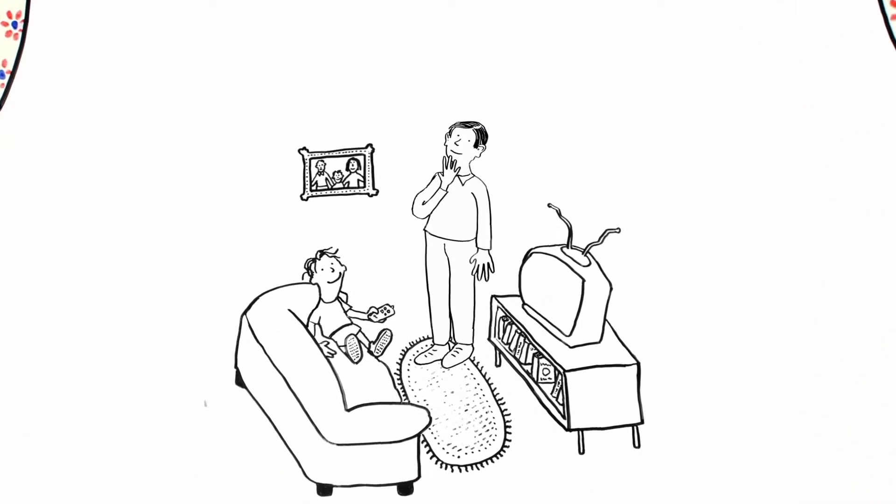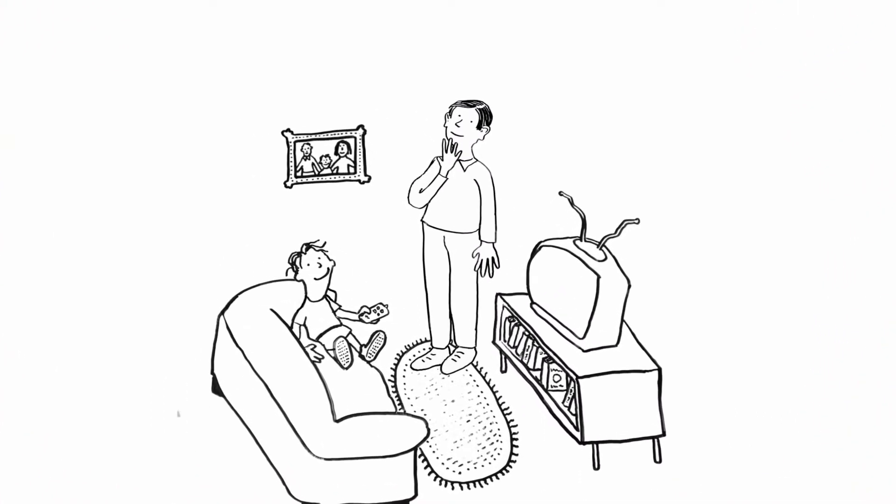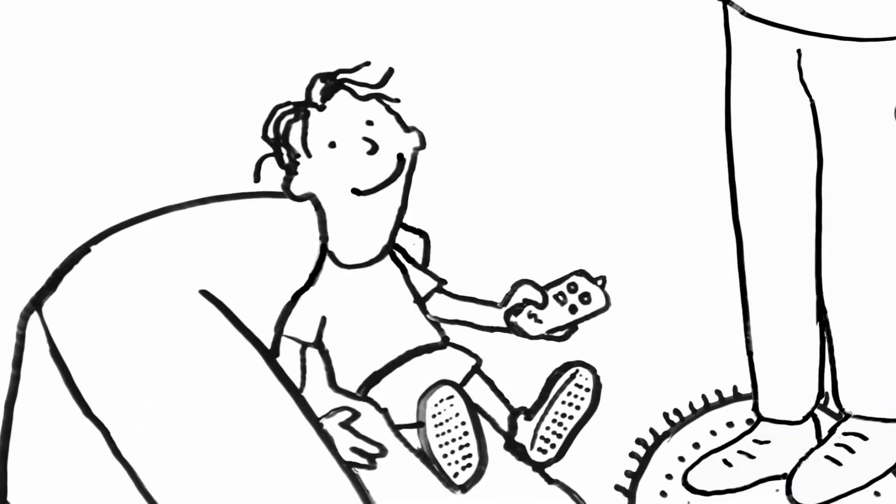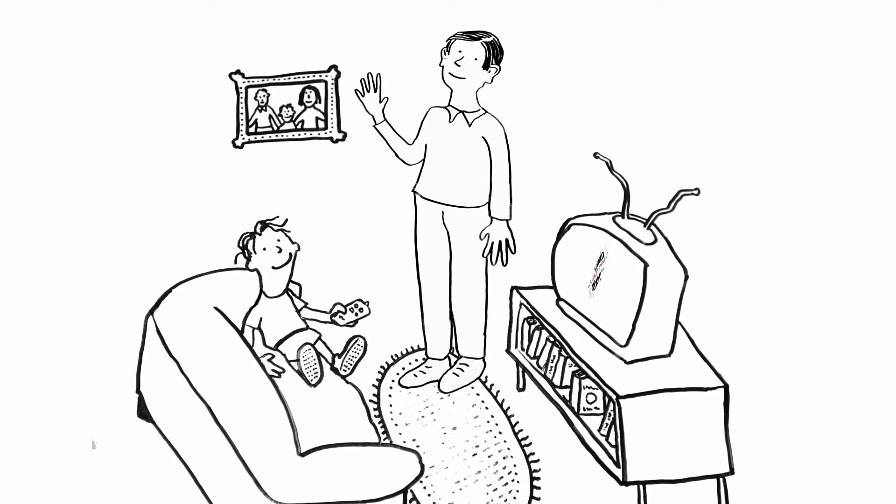Alex knows that the shops and houses of Rosenheim are warm and that when he wants to watch the match, he can turn on the TV and there will be power. But he doesn't know why, so Alex did what all children do and asked his father, who works at the city's utility company, where the power came from.